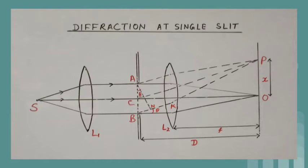The width of slit AB is of the order of the wavelength of incident light. Hence, diffraction occurs at the edge of the slit and the diffraction pattern is focused on the screen using a convex lens L2.